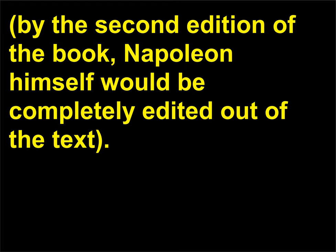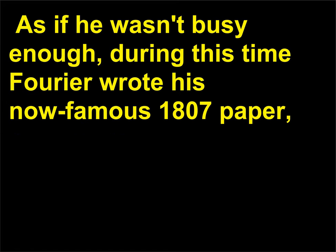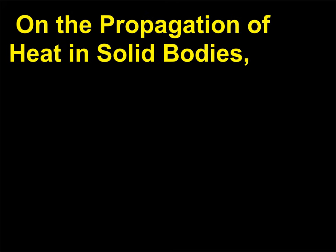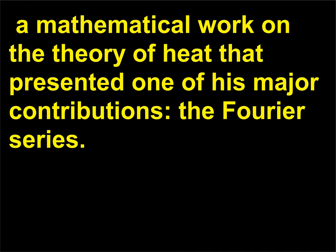By the second edition of the book, Napoleon himself would be completely edited out of the text. As if he wasn't busy enough, during this time Fourier wrote his now famous 1807 paper, On the Propagation of Heat in Solid Bodies — a mathematical work on the theory of heat that presented one of his major contributions, the Fourier series.